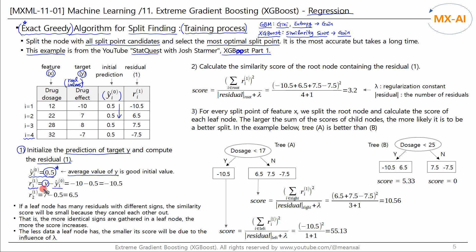For the first data point, the actual Y value is negative 10 and the initial prediction is 0.5, so the residual is negative 10.5. In this way, we calculate the residuals for all data points. Now, like GBM, we construct a root node with these residuals and create a decision tree.